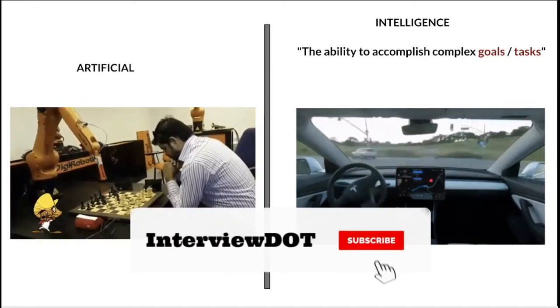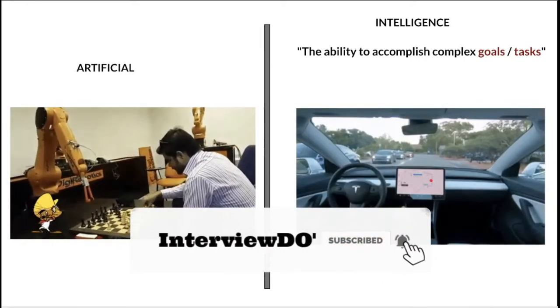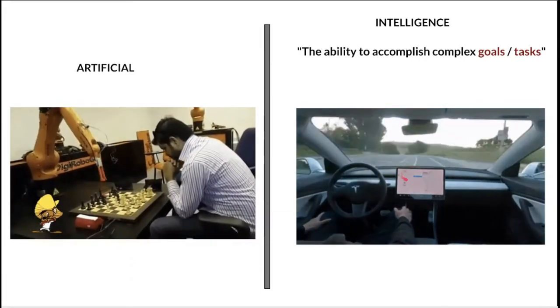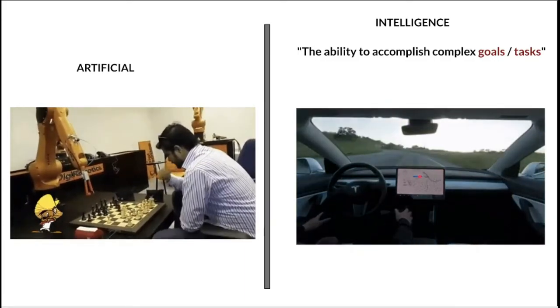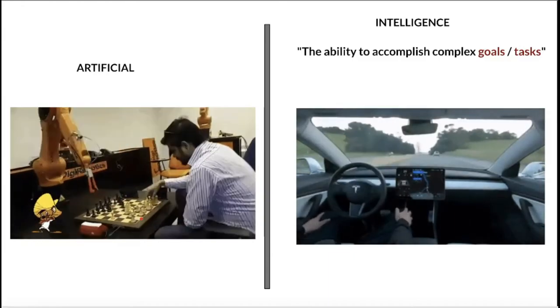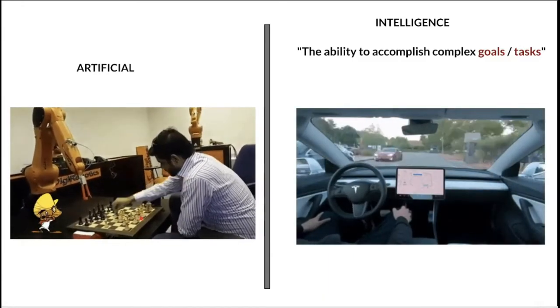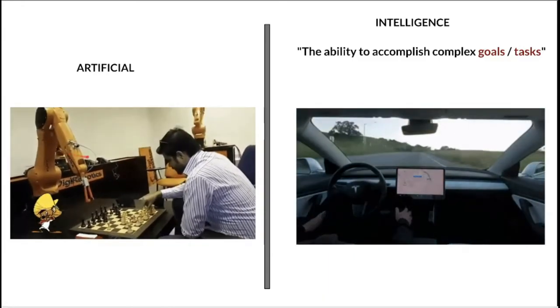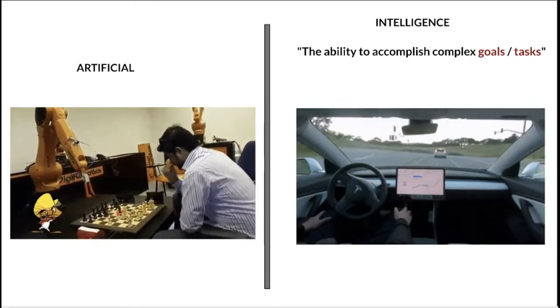Let's see another example: self-driving cars. Driving is actually a complex task; if a machine can accomplish this, then we can call it artificial intelligence. On the left-hand side you can see an example of playing chess. Playing chess is also complex; if a machine has the ability to accomplish this task, then we can call it artificial intelligence.